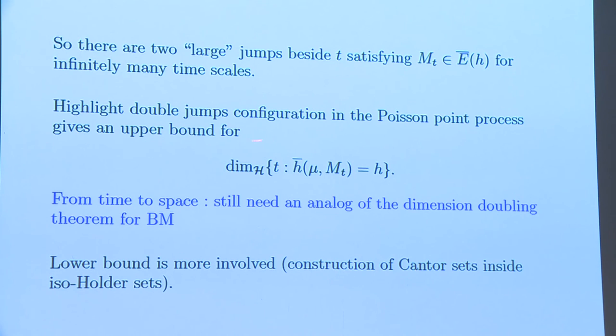If we highlight all this kind of double jump configuration, like what we did for the fractal percolation, we consider at each scale, the time, the increment, the intervals with this kind of configuration. And by considering its descendant, we also choose to keep all this double jump configuration. We get a set, a fractal set. And this will give an upper bound for this point. Remind that we do not want to compute this Hausdorff dimension.